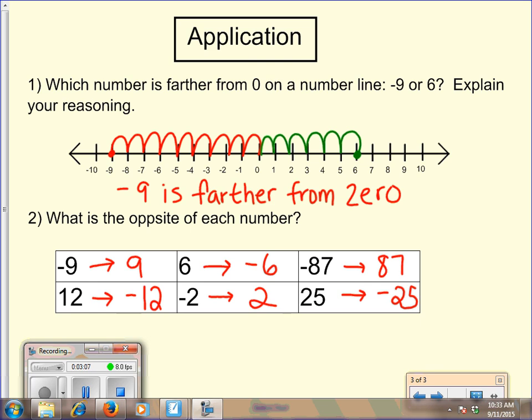And as you can see, the opposites of each number: negative nine would become a positive nine, its opposite. Six, positive six, has a negative six as the opposite.